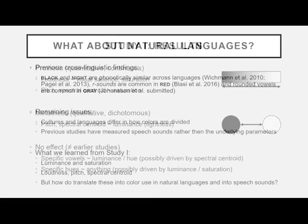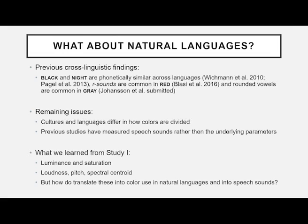So what do we do with this? We start looking at natural languages, because the first study is of course very experimental and set up. Previous cross-linguistic findings on this are quite sparse, but some people have found that black and night are phonetically similar across languages, red is connected to R sounds, and grey is connected to rounded vowels. Remaining issues include that cultures and languages divide colors differently and have different numbers of color terms, and previous studies used speech sounds rather than the underlying parameters we know are important.